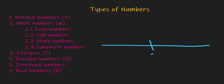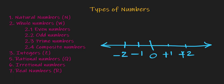This is 0, and these are positive and negative numbers, like minus 2. Any number that falls under this line is known as a real number. It can be a fraction, a whole number, or a natural number — any number within this line is known as a real number.